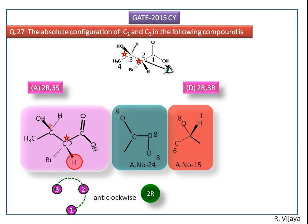Next we assign the RS configuration for the third carbon atom. Here oxygen becomes the higher priority, so the first priority goes to the OH group. The second priority goes to the two carbon atoms, so we have to consider the carbon chains of these two carbon atoms.